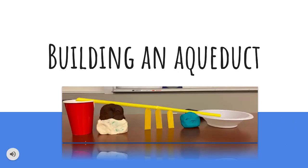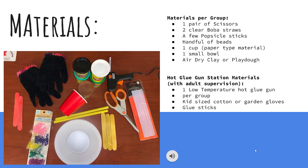Next, we are going to cover building the aqueduct. For the materials, you will need one pair of scissors, two boba straws, a few popsicle sticks, a handful of beads, one paper cup, and one small paper or plastic bowl.